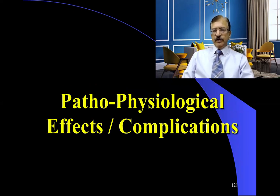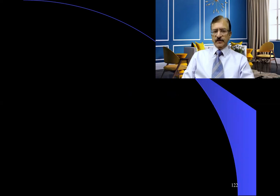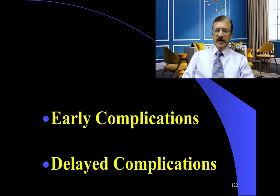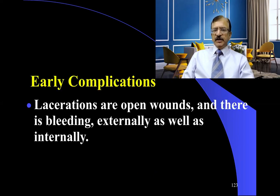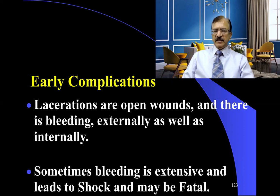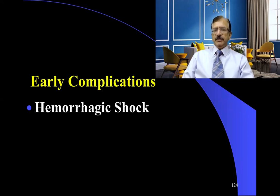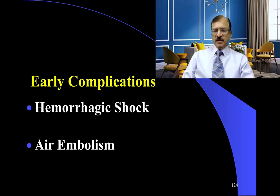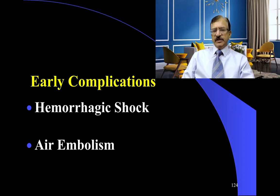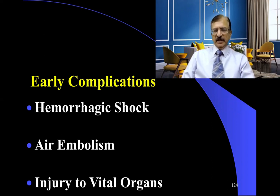Moving toward the pathophysiological effects or complications — they are early complications and delayed complications. The early complications: lacerations are open wounds, so there is bleeding externally as well as internally, and sometimes the bleeding is extensive and can lead to shock and may be fatal. So in early complications, hemorrhagic shock is the most important. Air embolism — if air is sucked in from the vessels — can also occur. Then injury to vital organs: some vital organs may be damaged because of blunt trauma and laceration, which can prove fatal.